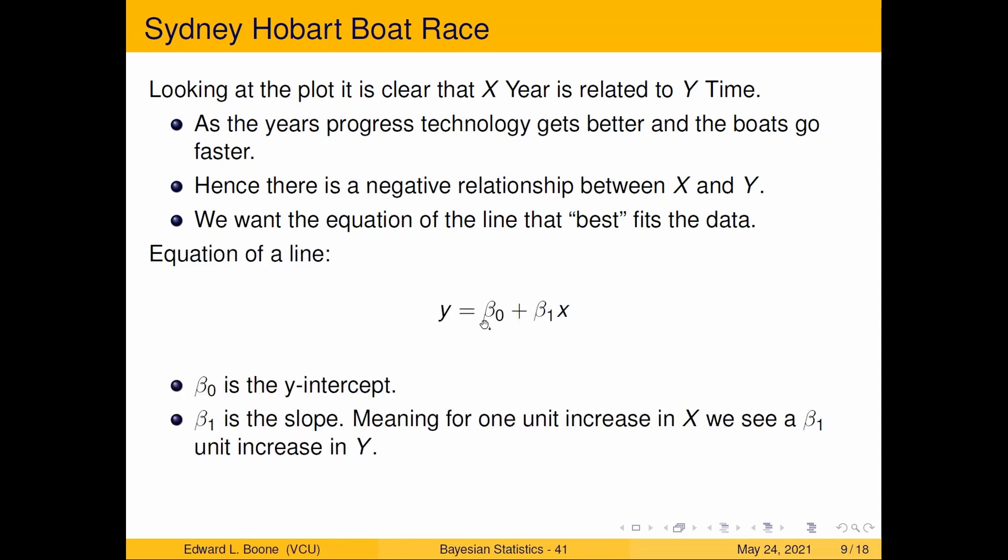So here's the equation of a line. So we have y equals beta zero plus beta one x. Now this is different than probably what you saw in your first algebra class, because there it's mx plus b. Well, here we have it written this way for other conventions that you'll see much later. Multiple regression, it works out better to have it this way. And if we think about things from a mathematical standpoint, this kind of is a reasonable thought. Again, beta zero here is the y-intercept. And beta one is the slope, meaning for every one unit increase in x, we see a beta one unit increase in y, or could be decreased.